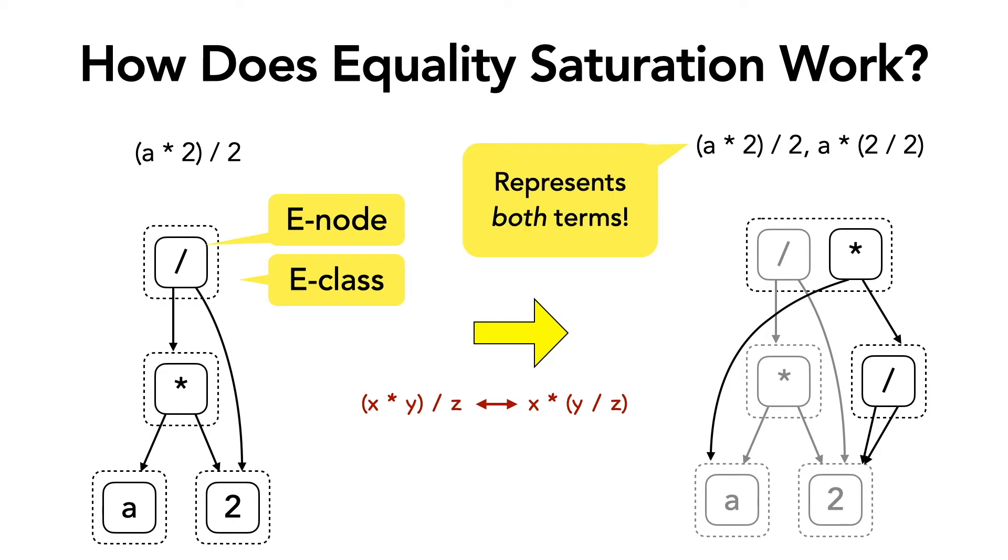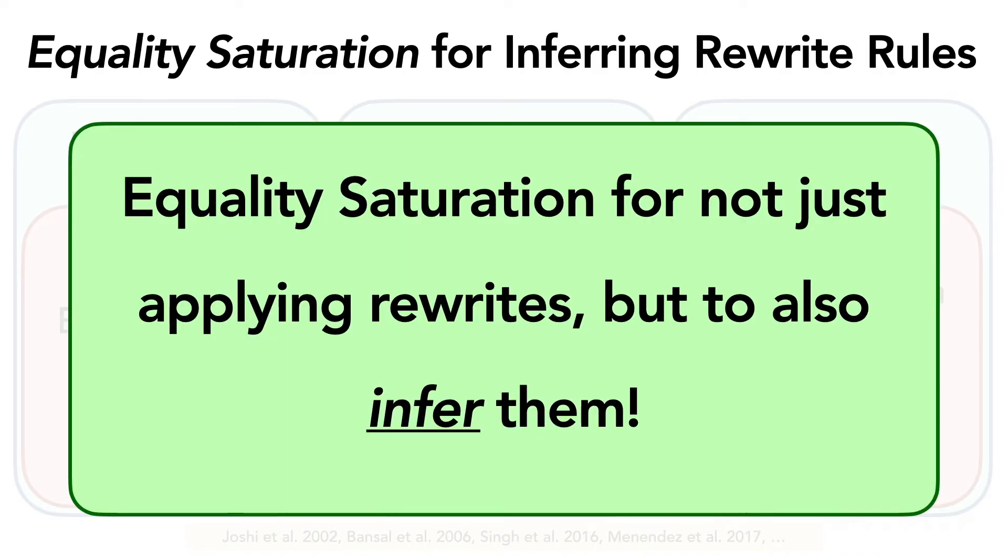So this is how equality saturation works. It is a technique for applying rewrites without discarding any of the old equivalent forms. Another thing to note here is that equality saturation exploits sharing. For example, the e-node 2 appears only once in the e-graph, even though it is used between different terms.